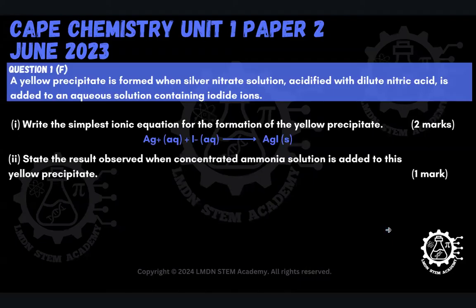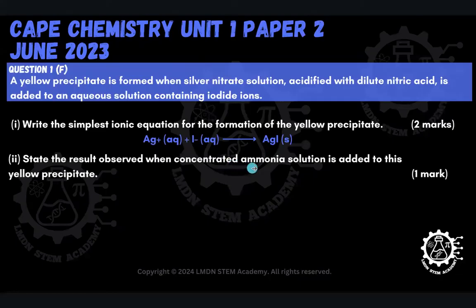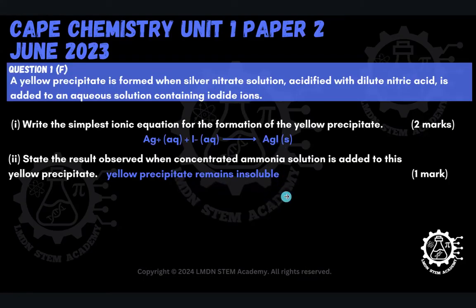Part 2 asks us to state the result observed when concentrated ammonia solution is added to this yellow precipitate. It's important to point out that it's the silver iodide which is the yellow precipitate — it's an insoluble precipitate. So what's going to happen if we add concentrated ammonia solution to that yellow silver iodide precipitate? Nothing is going to happen. The yellow precipitate is going to remain insoluble. Silver iodide does not dissolve when you add any level of concentrated ammonia to it — it's going to remain insoluble, so you'll still see your yellow precipitate.